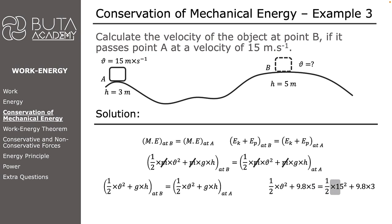Velocity at point A is 15 meters per second. Gravitation acceleration is 9.8 meters per second square and the height is 3 meters. Velocity of the object at point B is 13.63 meters per second.